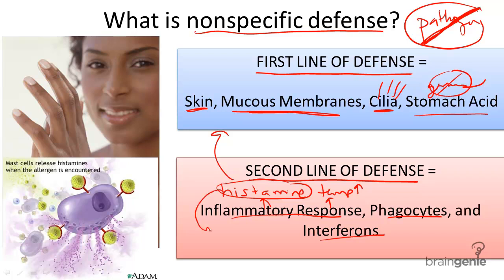Histamine will cause a cascade of reactions such as redness, sneezing, itching, runny nose — almost all the symptoms you feel when you have an allergic reaction or even a cold. It causes the blood vessels to dilate, bringing more white blood cells to the area in the presence of an infection or pathogen.